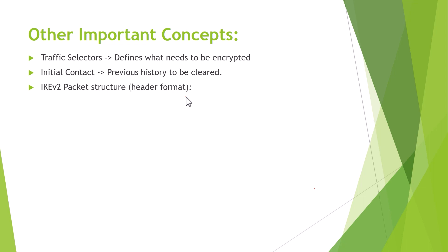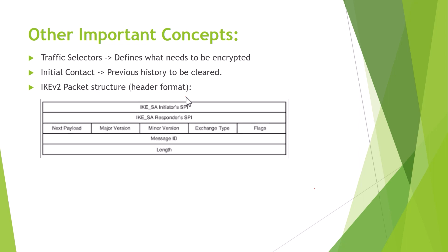Now let us briefly look at the header format and packet structure. Here we have the initiator and the responder. The first important field is SPI — Security Parameter Index. The SPI is used by the receiving host to identify which IKE version 2 session this packet belongs to. Why? Because there may be NAT, IP changes, and similar scenarios. This particular IKE version 2 SA session can be identified using the SPI. That is why SPI is at the top of the header. It is also useful when between two parties there are multiple IKE version 2 sessions running simultaneously — the SPI helps identify which specific IKE session is being referred to.